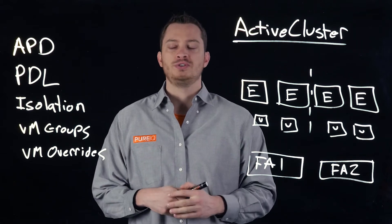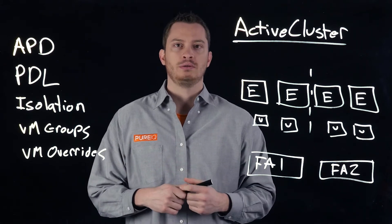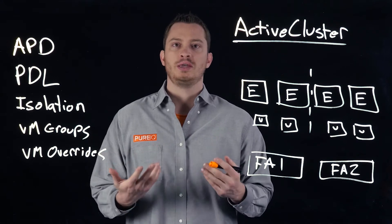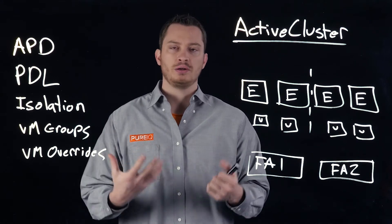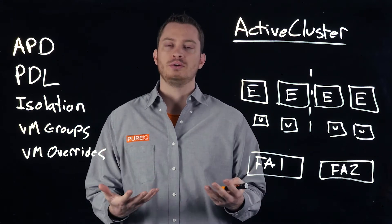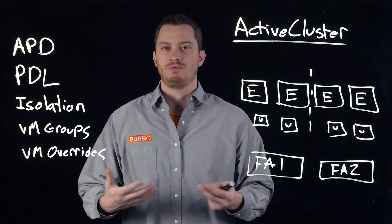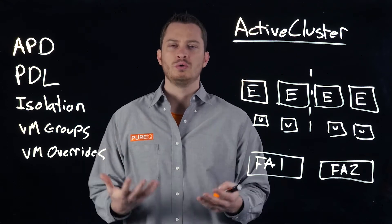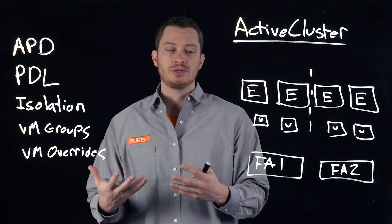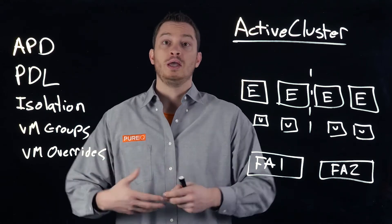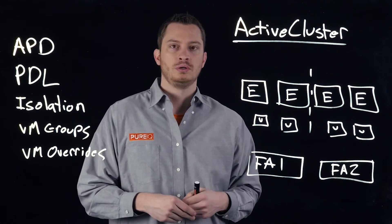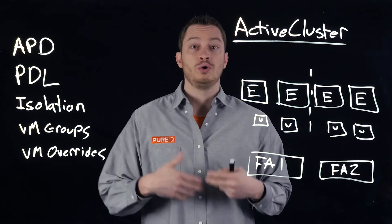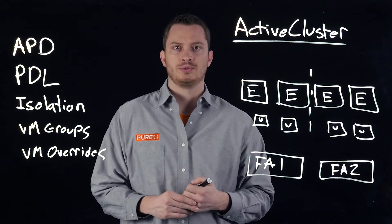VMware has a feature called vSphere High Availability — vSphere HA. What vSphere HA does is it monitors for certain failures. If you lose a VM, if you lose a host, if you lose some storage, vSphere HA can respond to that and restart those virtual machines on a different host — a host that still has access to those resources.